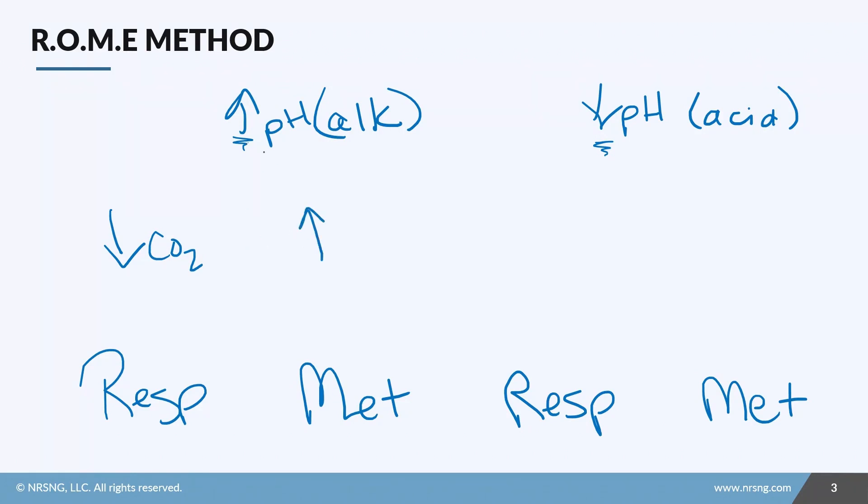All right, so if the pH is low and it's respiratory, then the CO2 would be high—opposite. If it's a metabolic issue and the pH is low, then the bicarb would also be low because metabolic equal. So do you see this? Respiratory has opposite arrows, metabolic has equal arrows.